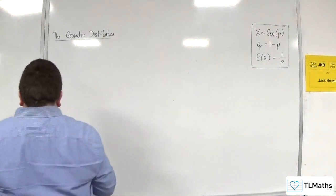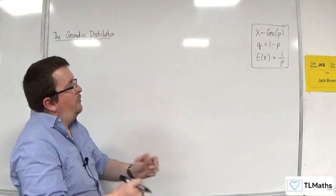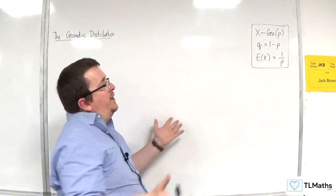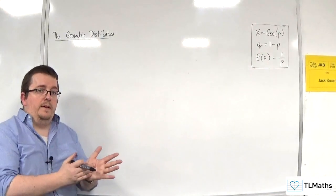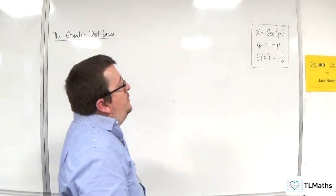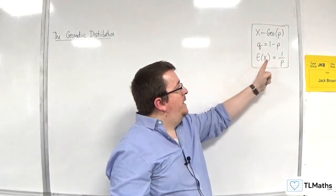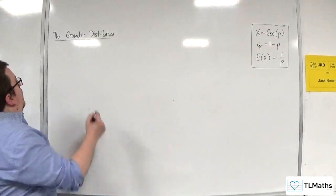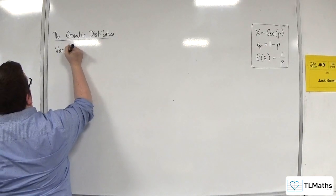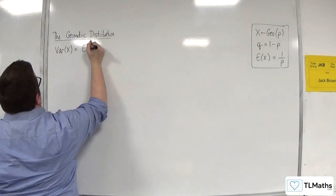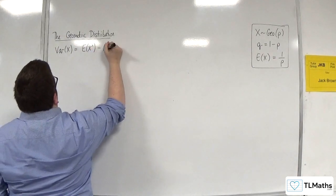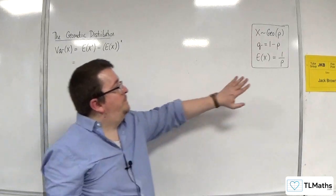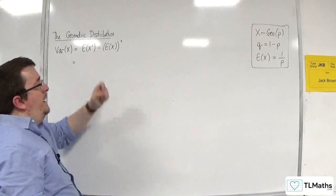Up here in the top right I've written a few things down. We know that X is a geometric distribution with probability p. We use the notation q = 1 − p, so I'll be using that in this video as well. And we have just derived that E(X) = 1/p. So we know the expected value of X. Now, what we want is Var(X). We know that is E(X²) − [E(X)]². The problem is finding E(X²).